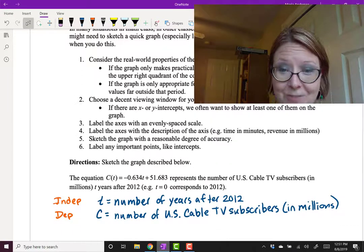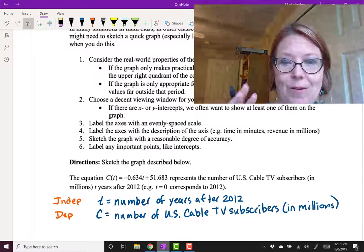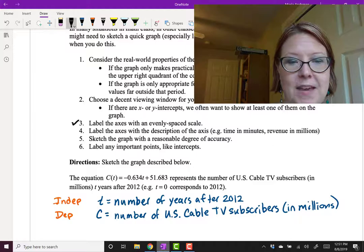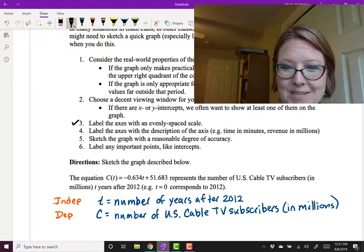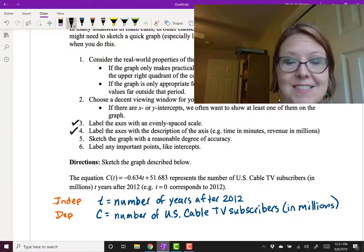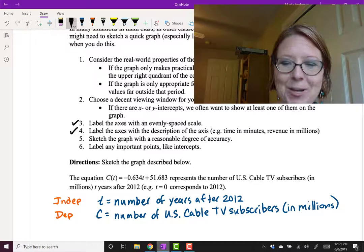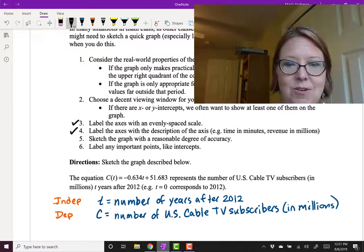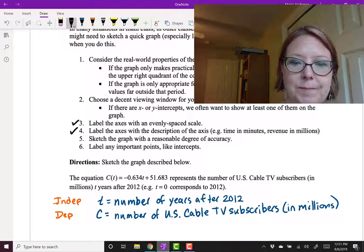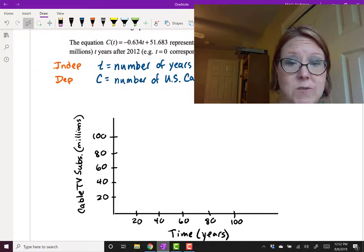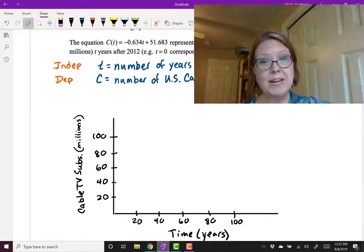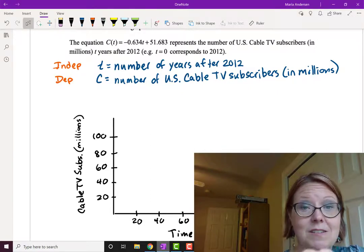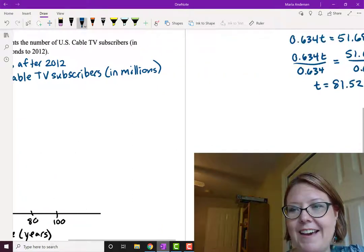We've chosen a decent viewing window for our sketch. Let me check off that we have labeled the axis with evenly spaced scale. We have described the axis—we've labeled time and the number of U.S. cable TV subscribers in millions. Now we just need to sketch the graph and label those intercepts. You might go over to Desmos to see what the graph looks like, but another way is to just use the intercepts we found and plot those. I'm going to live dangerously.